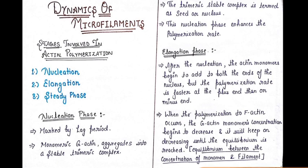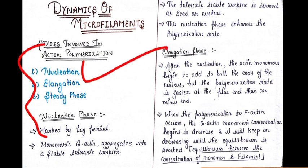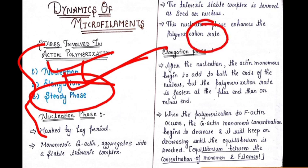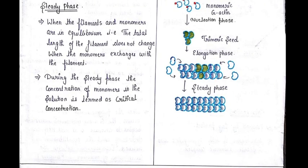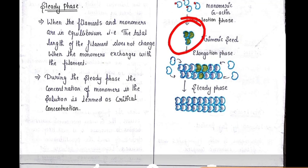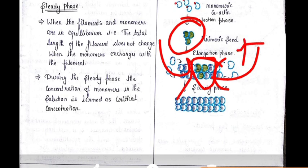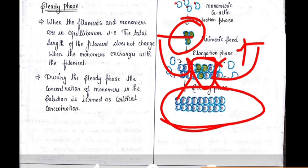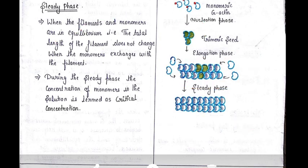So all this occurs in the phases — nucleation phase where polymerization rate is faster, and after that the steady phase where the polymerization rate is in equilibrium with that of your monomeric subunit concentration. The trimeric seed or nucleus grows faster at the plus end than the minus end, and at steady phase equilibrium is reached. That's all, thank you so much, bye bye.